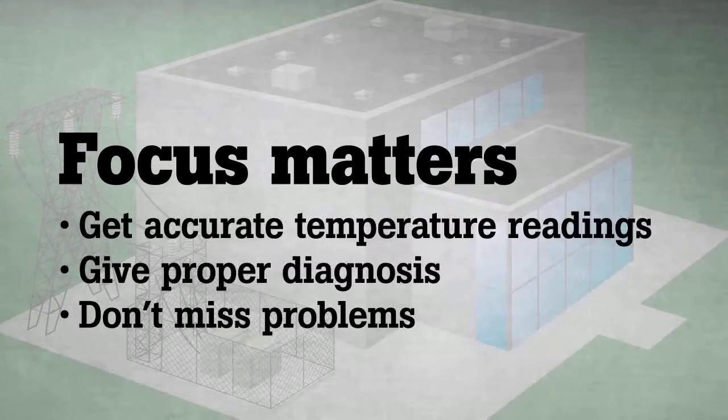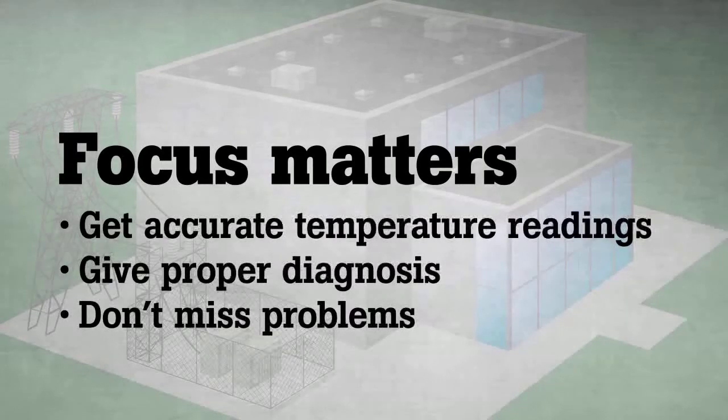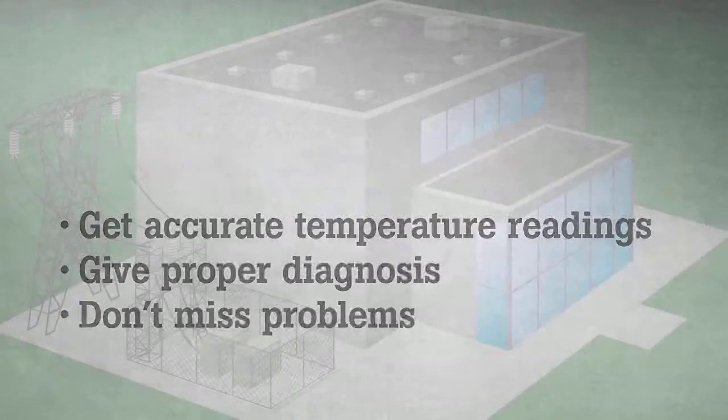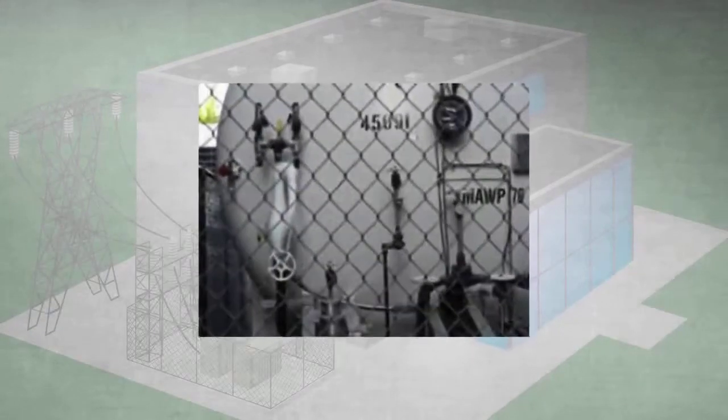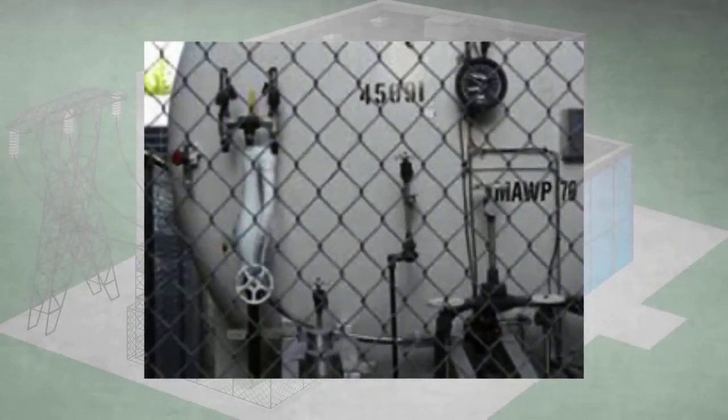Without an in-focus image, temperature measurements are often not as accurate, sometimes by as much as 20 degrees. And out-of-focus images make it much easier to miss a problem. Many inspection sites are difficult for passive autofocus systems.